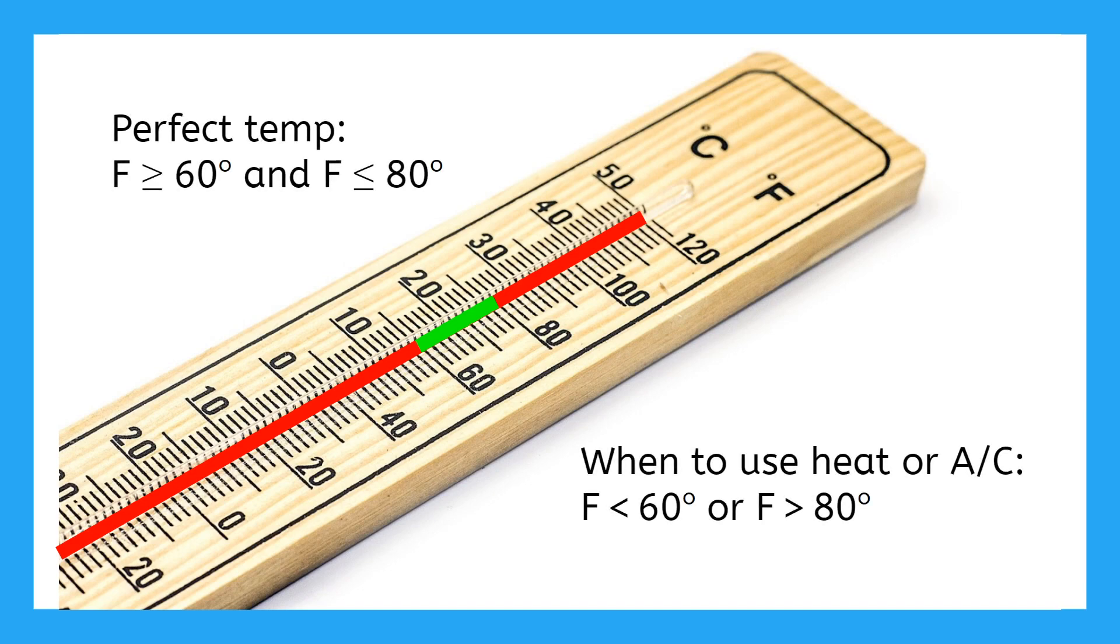The perfect temperature was between two numbers. So we said 'and,' because it has to be both hotter than one temperature and colder than the other. Whereas the imperfect temperature fell into two different categories, too hot or too cold. So we said 'or,' to show it could be one or the other, but not both.